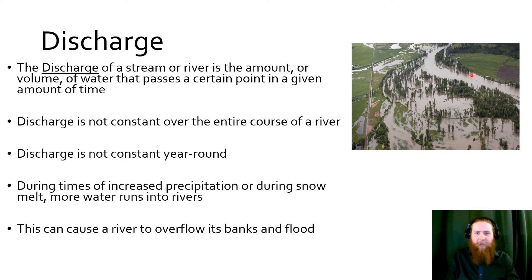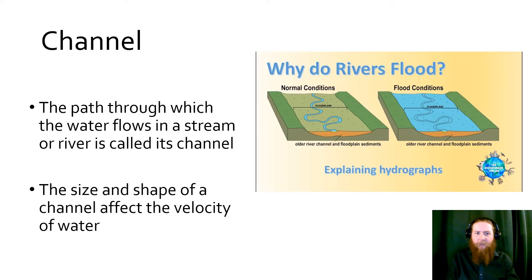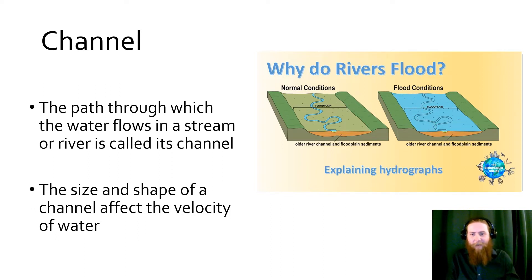Channel is the path through which this water is flowing. Under flood conditions, the water is escaping its channel. The size and shape of the channel — whether it's a wide river or a very narrow river — is going to affect velocity, the amount of water the river carries, and therefore the amount of erosion and sediment it is carrying as well.